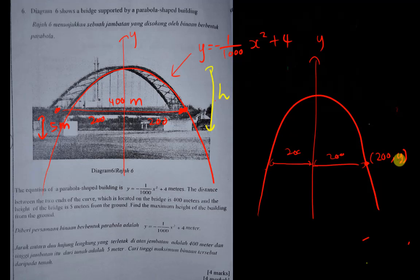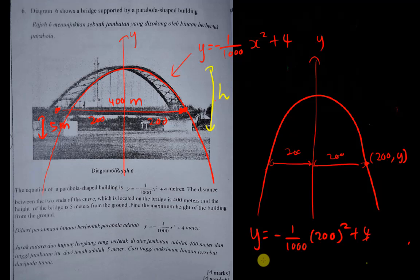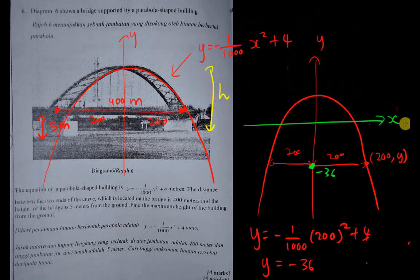I want to find the y value at x = 200. I substitute 200 into x: y = negative one over one thousand multiplied by 200 squared plus four. Using a calculator, this gives negative 36. So the y value at the bridge end is negative 36, and I can see the maximum point of the curve is at (0, 4) — because at x = 0, y = 4.